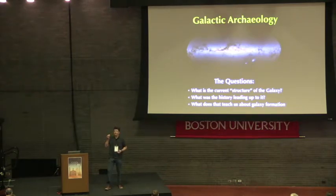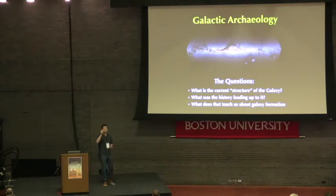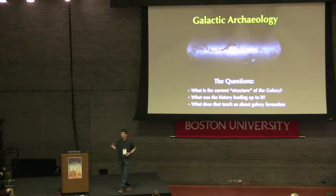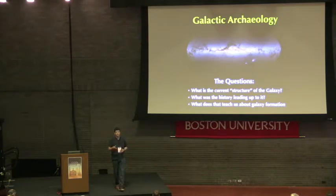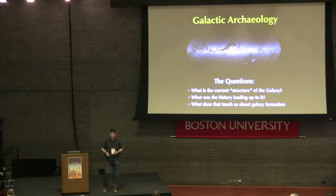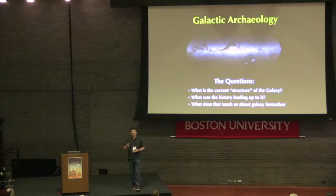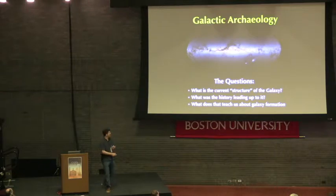The remit of galactic archaeology can be broadly summarized by three questions: What is the current structure of the galaxy — not just spatial structure, but structure in multi-parameter space including kinematics, spatial structure, chemistry, and age? What was the history leading to that structure? And finally, what does that teach us about galaxy formation with a lowercase 'g', which is one of the most important topics in modern cosmology?